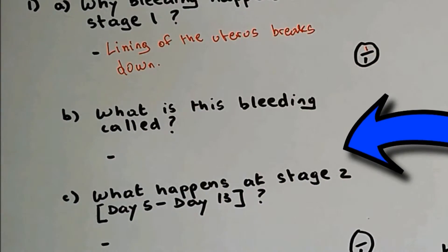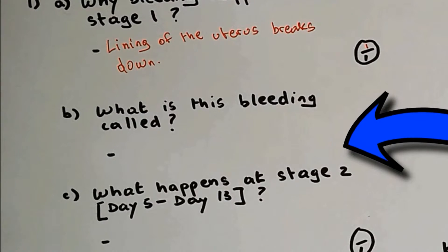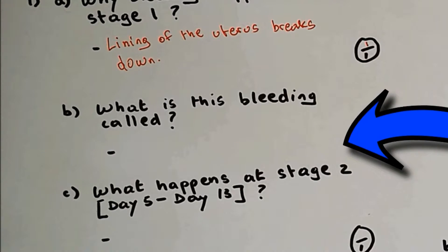Question 1b: what is this bleeding called? The bleeding which happens in stage one is called period.